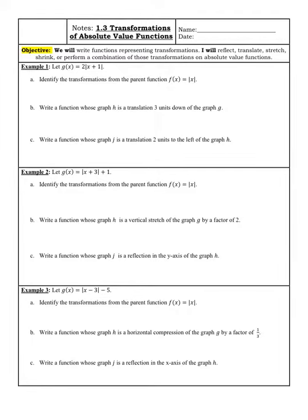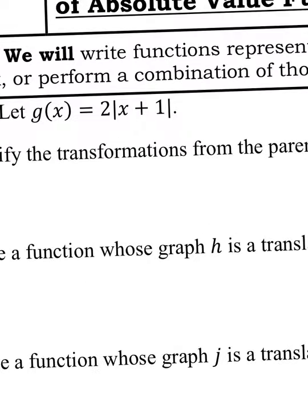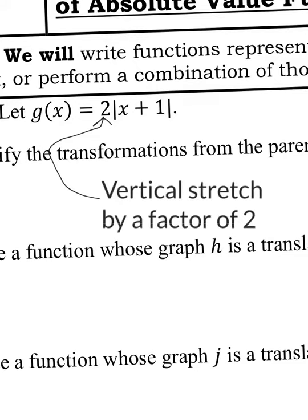In example 1, let g of x equal 2 times the absolute value of x plus 1. Identify the transformations from the parent function f of x equals the absolute value of x. Anytime you multiply a number greater than 1 on the outside, it'll be a vertical stretch by a factor of that number. So this is a vertical stretch by a factor of 2.